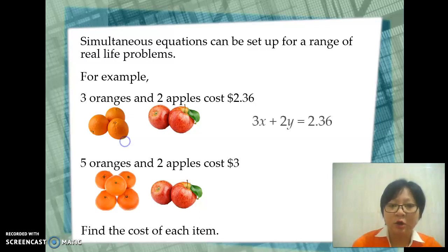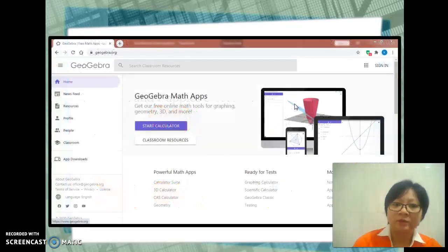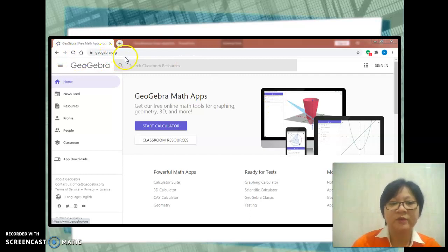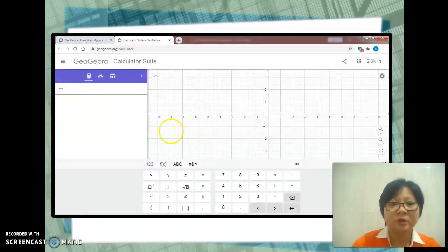Let an orange be x and an apple be y. So 3x plus 2y equals 2.36. Next, 5x plus 2y equals 3. After you get two linear equations, open your browser and find geogebra.org. After you find it, click the Start Calculator button.